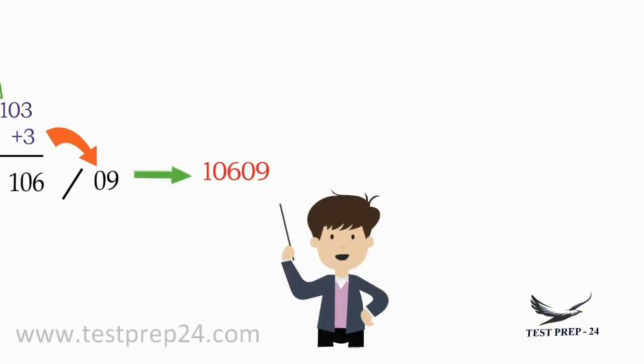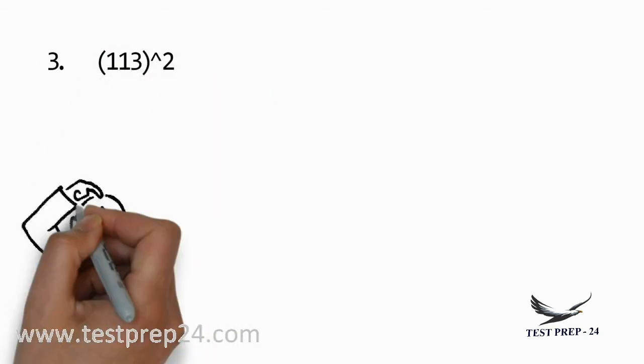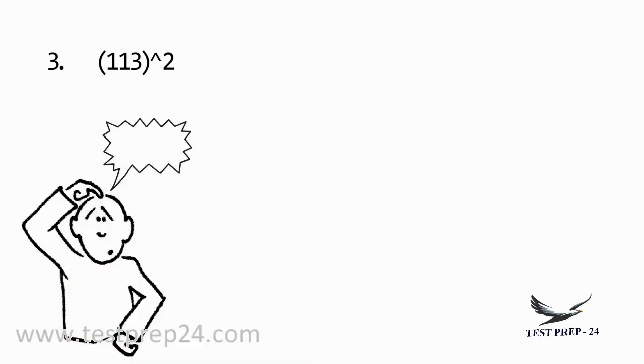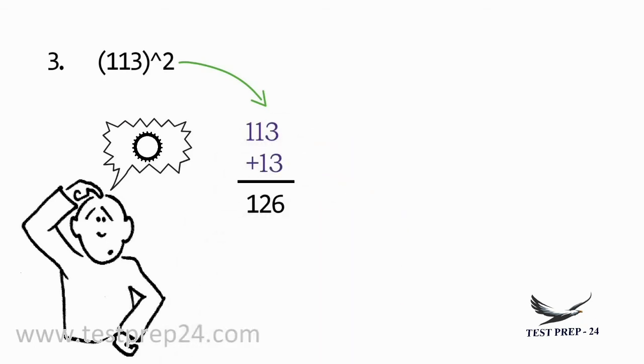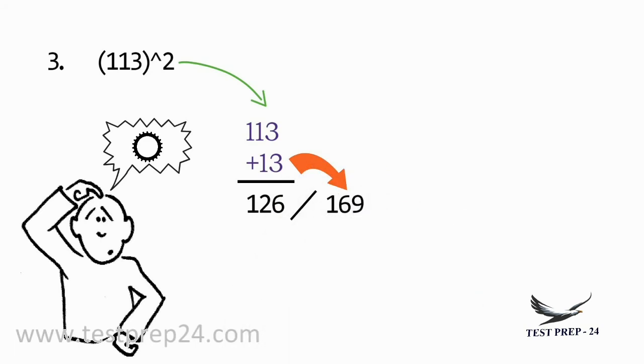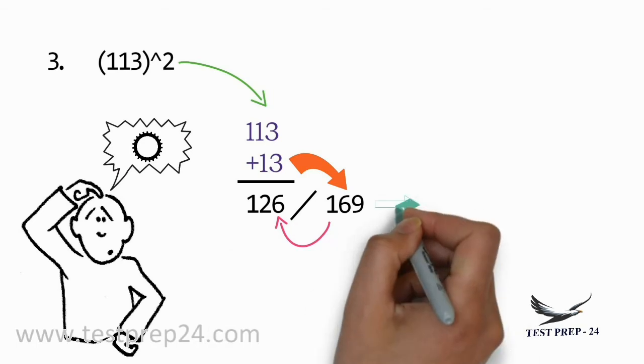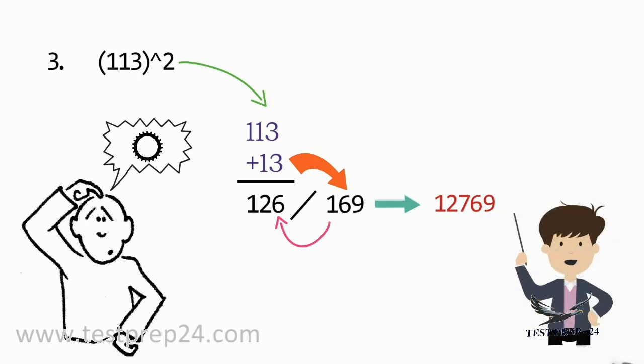Next example: 113 whole square. 113 is 13 greater than 100, so add 13 to 113, which becomes 126. The square of 13 is 169. In the second part you must have only two numbers, but here we have three, so add the 1 to the previous value. 126 plus 1 equals 127, so this will be 12769.